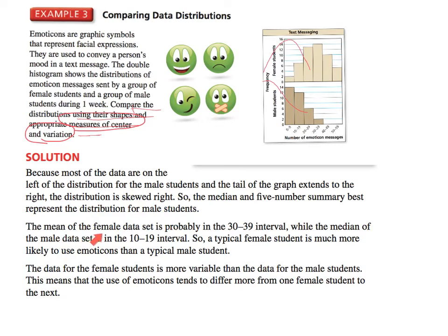The mean of the female data set is approximately 30 to 39 emoticon messages sent. The median of the male set is about in the 10 to 19 interval. So a typical female would send much more emoticons than a typical male student. Since the female distribution was symmetric we use the mean, and since the male distribution is skewed we use the median.